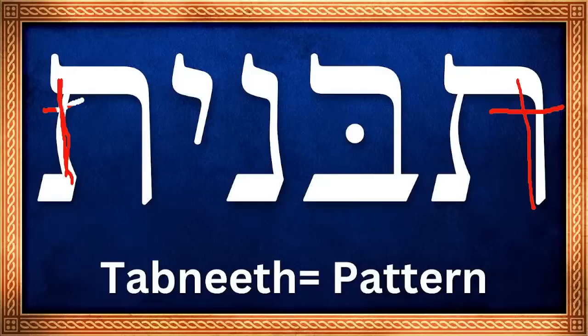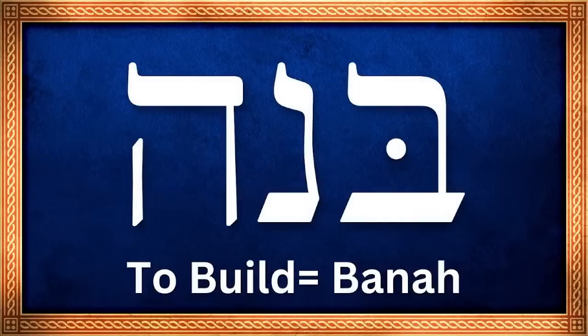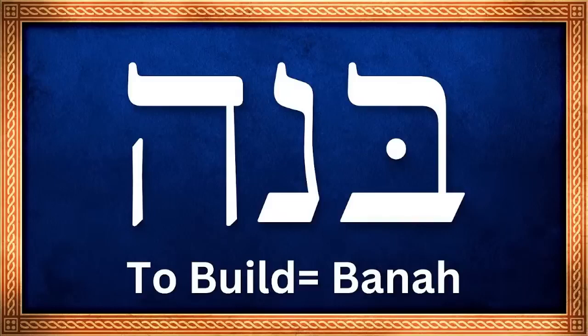I want to go even deeper because there's a root word for pattern, and this is the word banah. This is the root word for pattern — banah — and it means to build, to establish, to build something. It's a picture of building a house or building a structure. It means to erect, to put up, to make strong a structure.